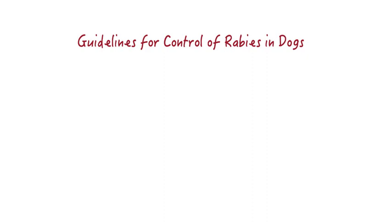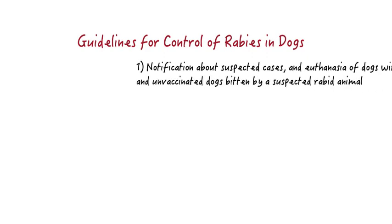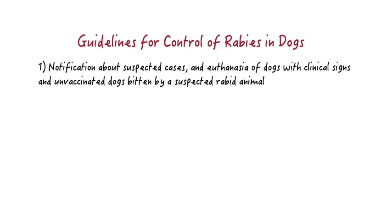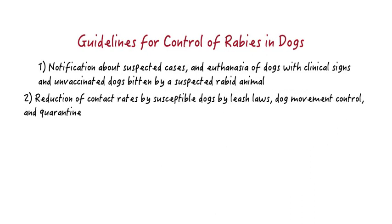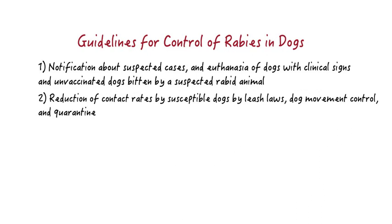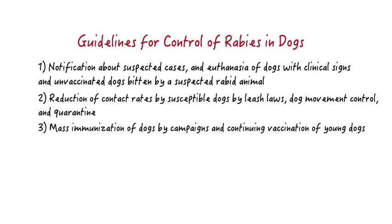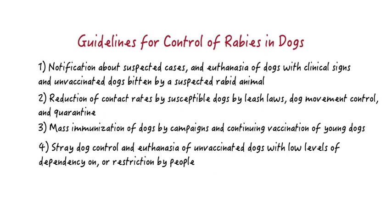Comprehensive guidelines for control in dogs have been prepared internationally by the World Health Organization and in the USA by the National Association of State Public Health Veterinarians, and include the following: notification of suspected cases and euthanasia of dogs with clinical signs and dogs bitten by a suspected rabid animal; reduction of contact rates between susceptible dogs by leash laws, dog movement control, and quarantine; mass immunization of dogs by campaigns and continuing vaccination of young dogs; and stray dog control, euthanasia of unvaccinated dogs, and dog registration.